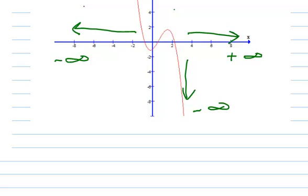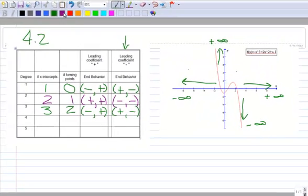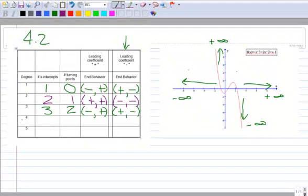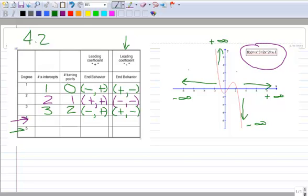I've got the first 3 rows filled in for you. Go ahead and do polynomial degree 4 — you can tell if you have a positive or negative leading coefficient by looking at the equation. Then do degree 5 as well. Do those two rows on your own and then we'll pick up in the next video.